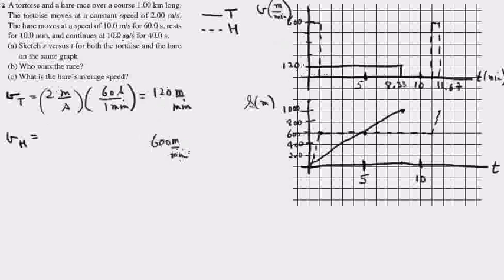That's what you see plotted along here. First of all you have 120 meters per minute for the hare.